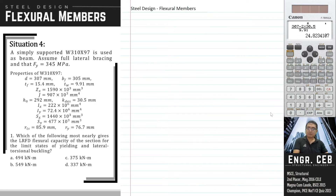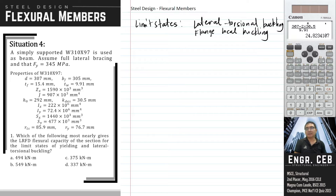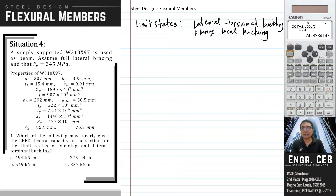Since we have a web that is compact and a flange that is non-compact, the limit states we should investigate are lateral torsional buckling and flange local buckling. When determining the nominal moment strength of the section, we will only consider these two limit states. For the first question, we are asked to determine the LRFD flexural capacity based on yielding and lateral torsional buckling. Based on the yielding limit state, the nominal moment strength equals the plastic moment.